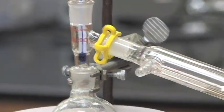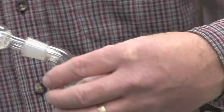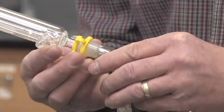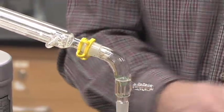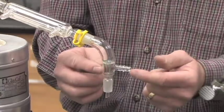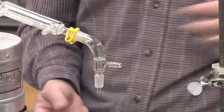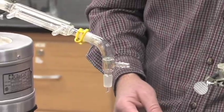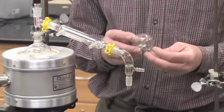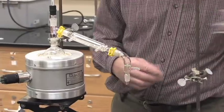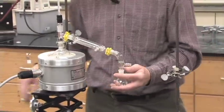And then we'll have another adapter on here at the bottom of the condenser and these adapters look different. There may be the side arm on the outside or it may be on the inside of the glass, it doesn't really matter.